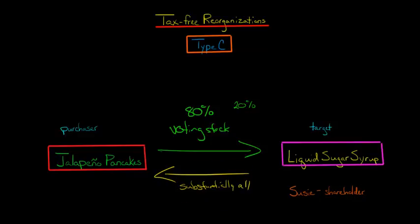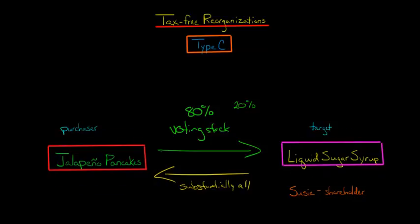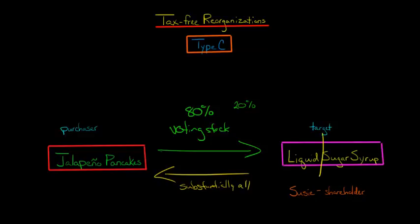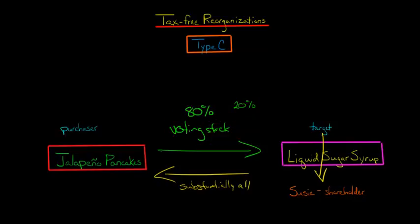After all the assets of the target have gone to the purchaser and the target has received voting stock and possibly some boot — some cash or something — the target needs to liquidate. The target is going to distribute everything that they've received from the purchaser. Whether it be voting stock, 80% or 100%, or whatever else they receive, they're going to distribute that to their shareholder. Let's say they have one shareholder named Susie. So Susie is going to receive all that voting stock and whatever cash, given first to the target and then the target gives it to Susie.